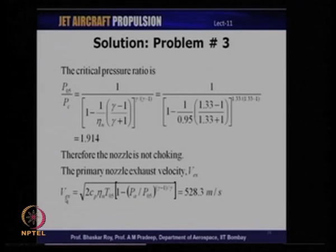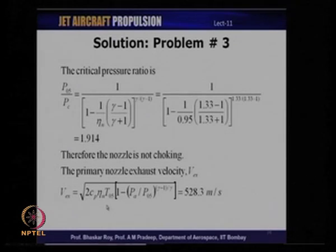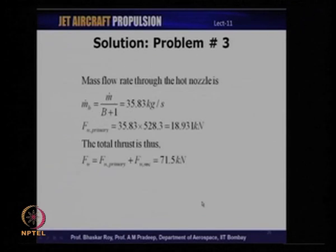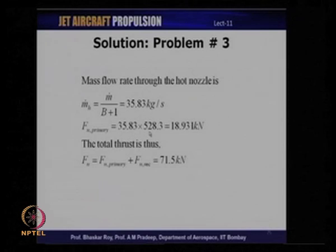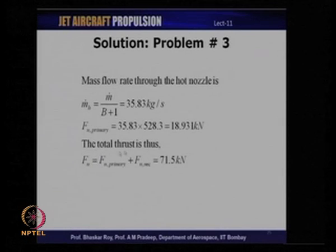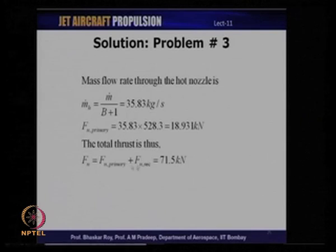For the core engine: HP turbine drives the compressor — T₀₄ − T₀₅' = (Cₚ_A/(η_mech·Cₚ_G))·(T₀₃ − T₀₂) → T₀₅' = 1141 K. LP turbine drives the fan → T₀₅ = 877.8 K. HP turbine pressure ratio P₀₄/P₀₅' = (T₀₄/T₀₅')^(γ/(γ−1)) = 3.902. Turbine inlet pressure P₀₄ = 25 − 1.5 = 23.5 bar. P₀₅ = 1.878 bar. Hot nozzle pressure ratio = 1.878 < critical ratio 1.914, so the hot nozzle is also not choked. Hot nozzle exhaust velocity = 528.3 m/s; core mass flow = 35.83 kg/s; core thrust = 18.931 kN. Total thrust = 52.532 + 18.931 = 71.5 kN.